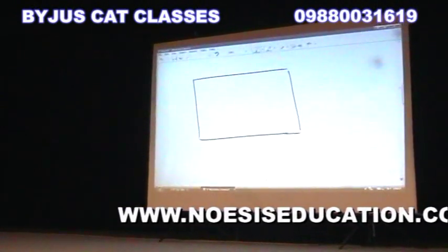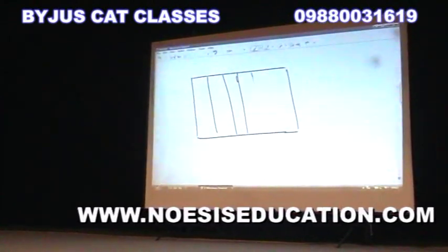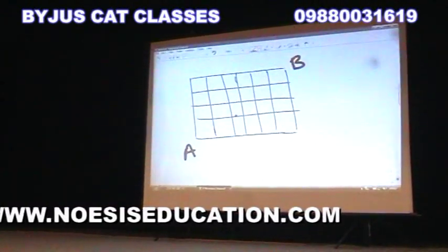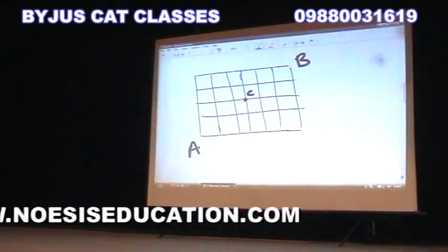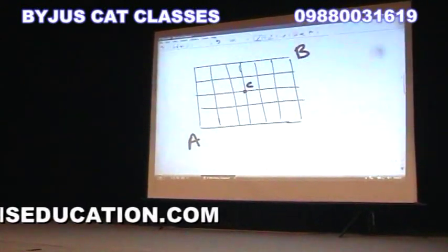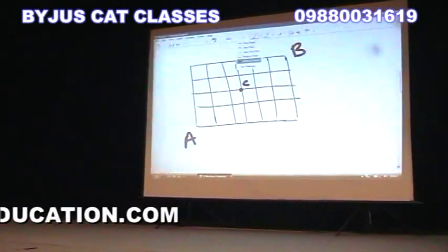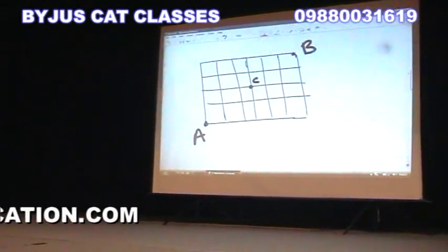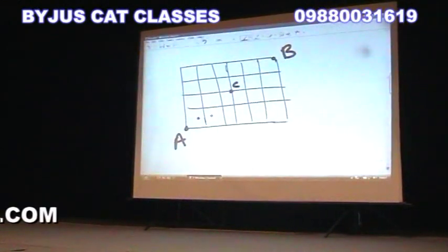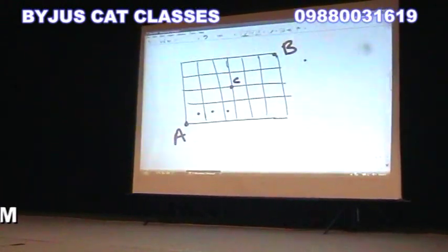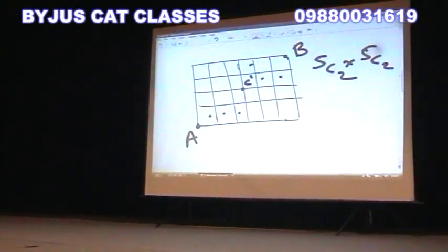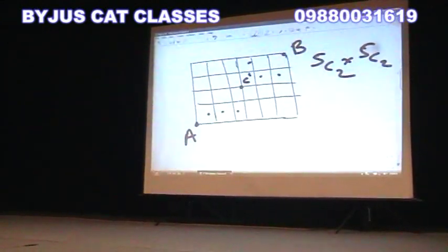This connects to the 2008 CAT questions. A person is going from A to B — how many ways can he go from A to B via C? This is CAT 2004. This is a product rule question. How many ways from A to C? Count three zeros and two ones: that's 5C2. C to B is again three horizontal and two vertical: 5C2. So the answer is 5C2 × 5C2.